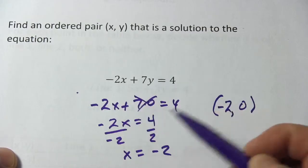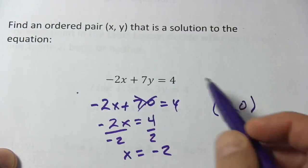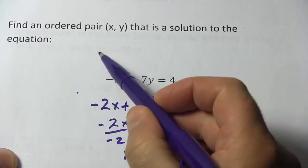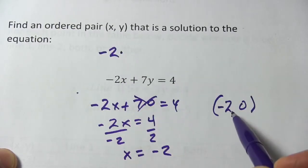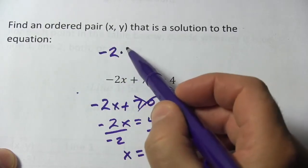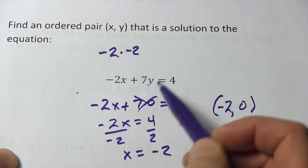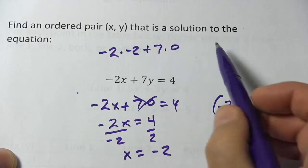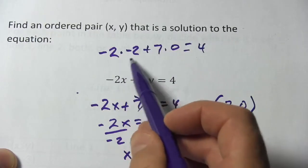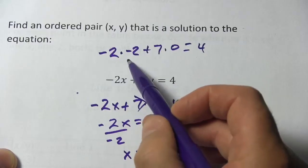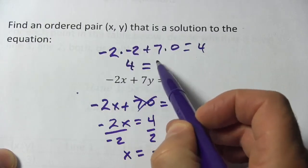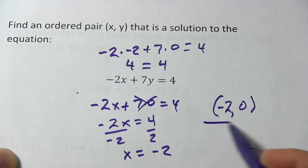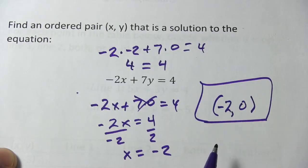If you're not sure that this is a solution, you can take those numbers and plug them back in for x and y. So negative two times negative two plus seven times zero equals four. A negative two times a negative two is four, and seven times zero is zero, and you get four equals four. And that shows that this is indeed a solution.